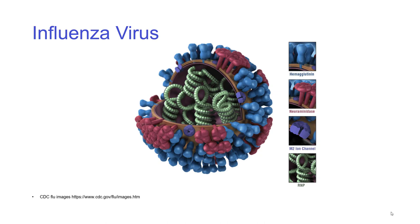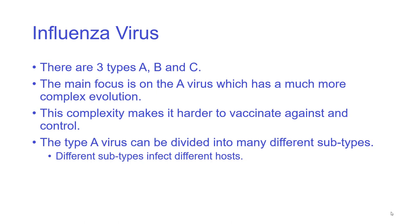Hemagglutinin and neuraminidase are the two most important proteins in the virus, in terms of recognising and invading host cells. There are three types of influenza virus: A, B, and C. We're going to focus on A because it has a complicated structure and evolution, and its segmentation means it evolves rapidly and can move between hosts. It's the most likely to cause serious and pathogenic diseases in humans, although we also get B. Vaccines commonly work against A and B, but the complexity makes it hard to vaccinate against and control, particularly the A virus.